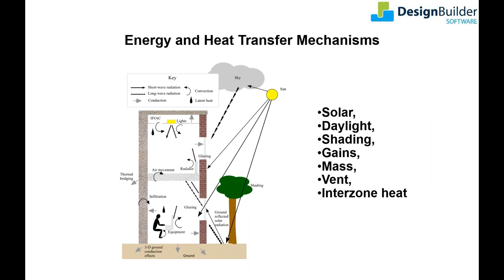Rather than assessing a series of independent energy saving measures — which is quite often the approach — what we need are tools that help us identify not just the best individual ECMs, but how the ECMs combine and work together as a complete solution. It's not possible to do that using traditional iterative or parametric simulation methods. This is where optimization comes in.